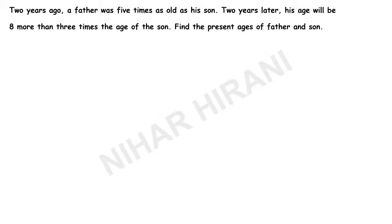Let us solve this question. Two years ago a father was five times as old as his son. Two years later his age will be eight more than three times the age of his son. Find the present age of father and son. This is really very easy and we will solve this under four minutes.